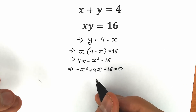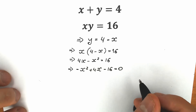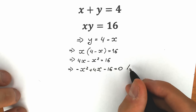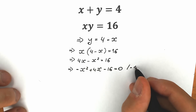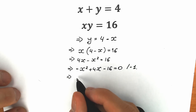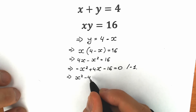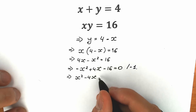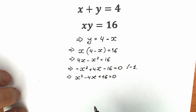This is a quadratic equation. It looks good, but we have a minus leading coefficient. We prefer plus, so let's multiply both sides by minus 1. As a result, we have x squared minus 4x plus 16 equal to 0. Now we have a basic quadratic equation.